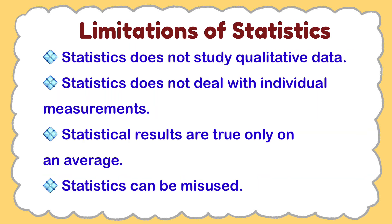Now let us look at some limitations of statistics. Statistics are numerical statements of fact, so qualitative characteristics like honesty, efficiency, and intelligence cannot be studied directly. However, it is possible to study such qualitative characteristics statistically by expressing them numerically — for example, if we want to study the intelligence of students in a class, we can do so on the basis of marks obtained by them in an examination.